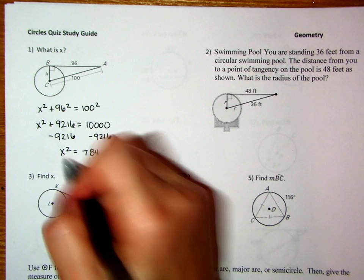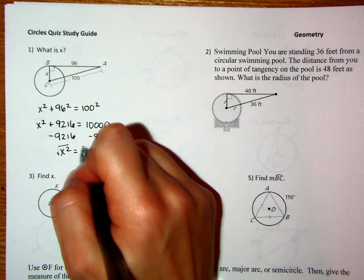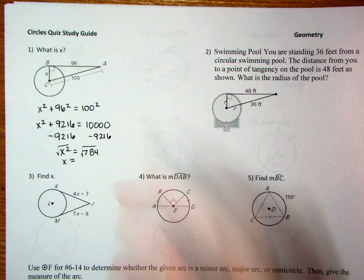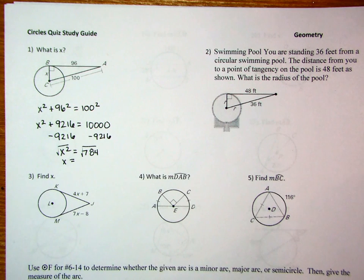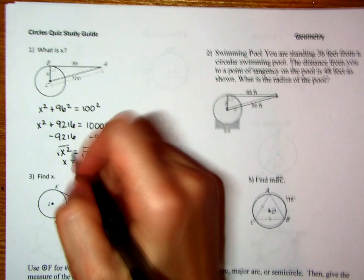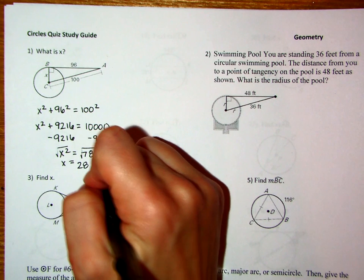And then the opposite of squaring is square rooting, so we're going to take the square root of both sides. So then when we take the square root of 784, we get that x is going to be 28 units.